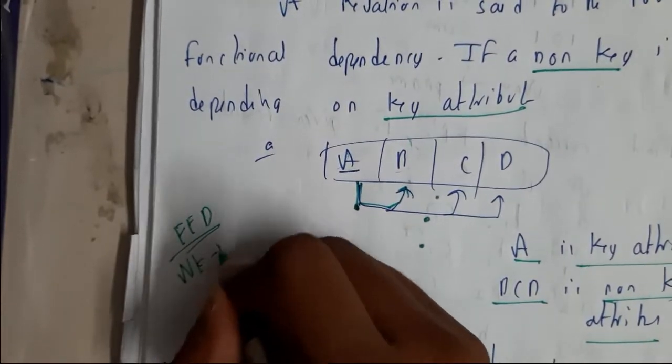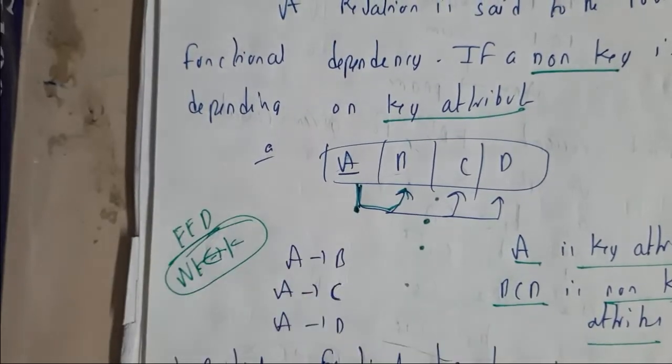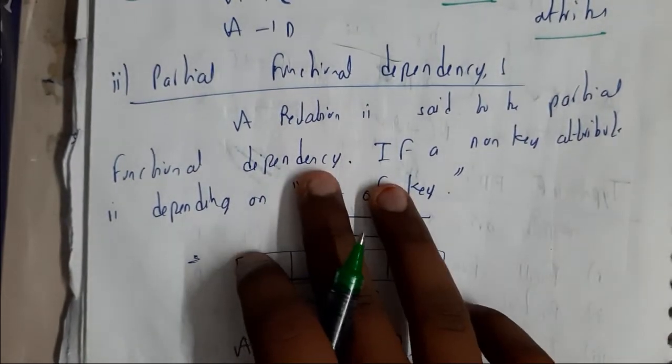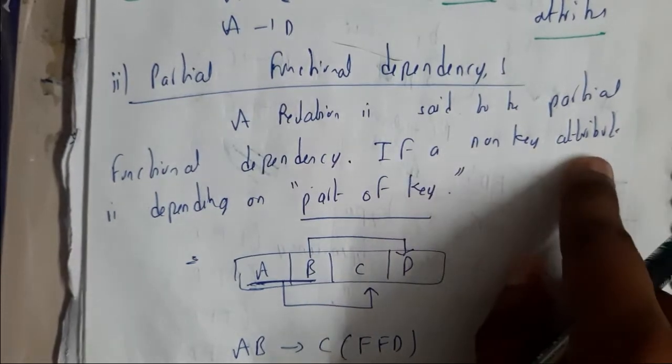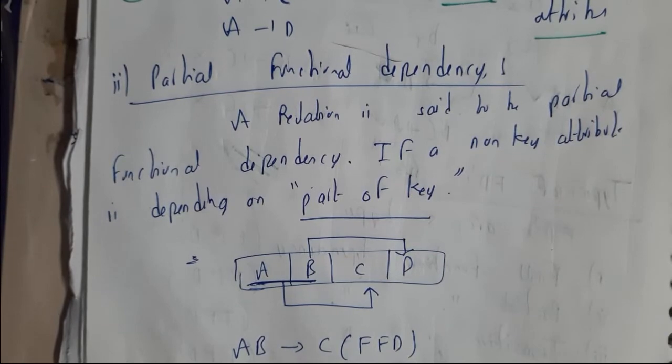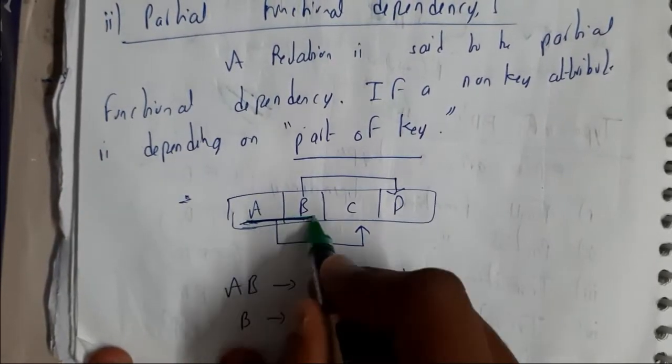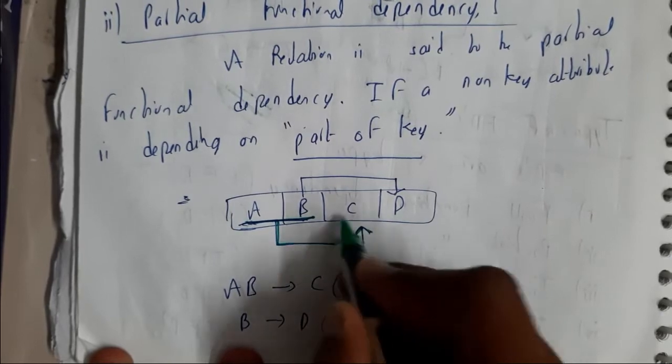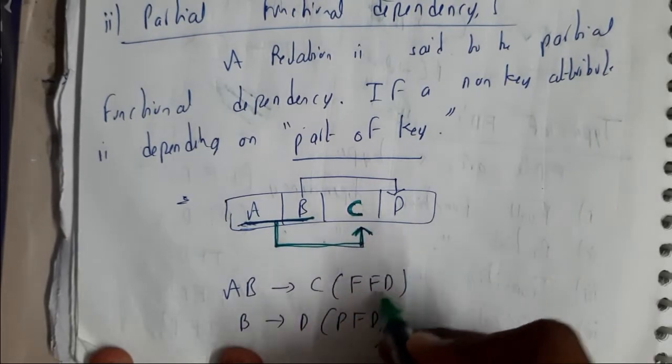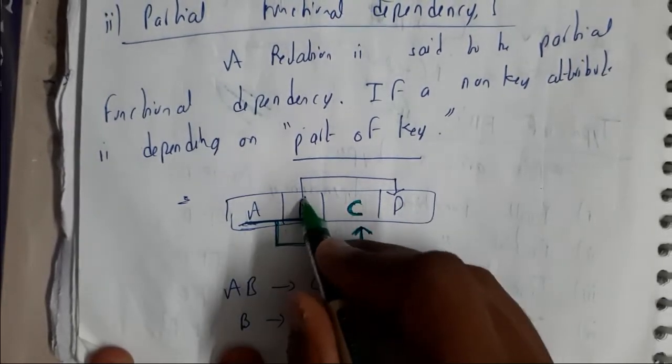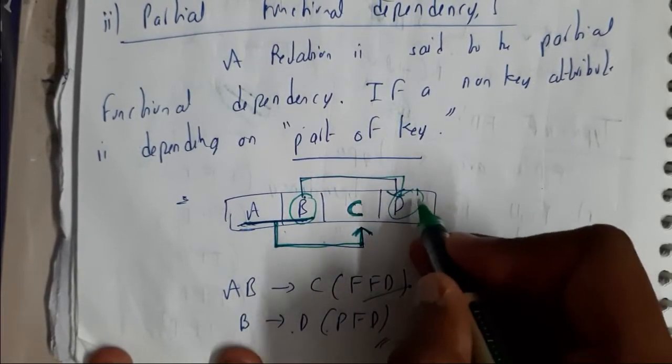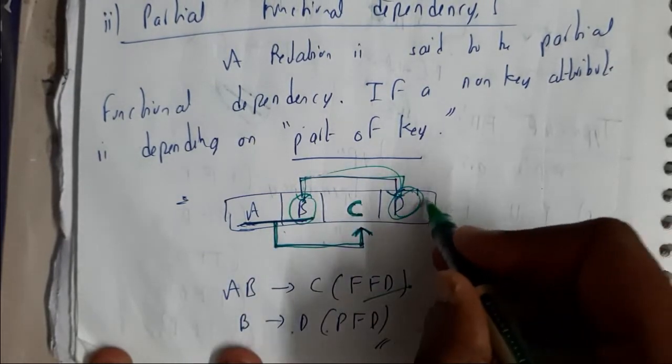Partial functional dependency says that a non-key attribute is depending on part of key. If you consider AB is our key and it is arrowed to C where C is a non-key, that is FFD (full functional dependency). Whereas B → D, here a part of key is having the direction towards the non-key. So here non-key is depending on part of key, hence this comes under partial functional dependency.